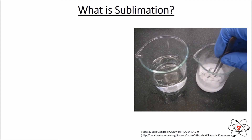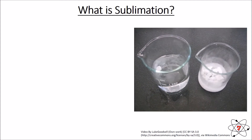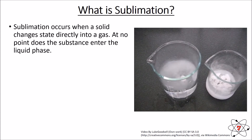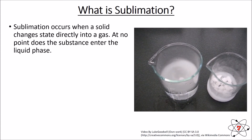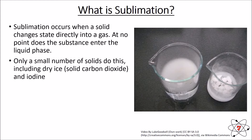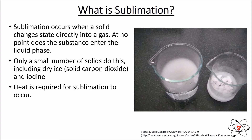Sublimation occurs when a solid changes state directly and becomes a gas — at no point does the substance enter the liquid phase. In this video clip, carbon dioxide that has been frozen — also known as dry ice — is added to a beaker of water. The water is at a much higher temperature, so the dry ice receives energy, heats up, and changes directly from a solid to a gas. Only a small number of solids do this; dry ice and iodine are examples. Heat is always required for sublimation to occur.